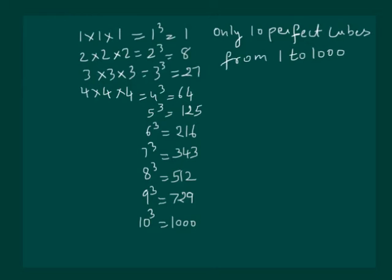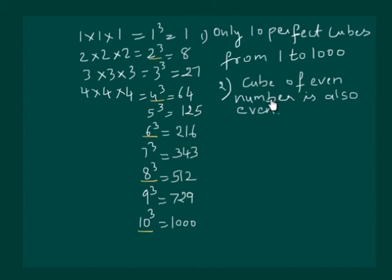Let us look at the cubes of even numbers. 2 is an even number, 4, 6, 8 and 10. Clearly, we can see that cube of even number is also an even number. Let us check all of them. So we can say that cube of even number is also an even number.